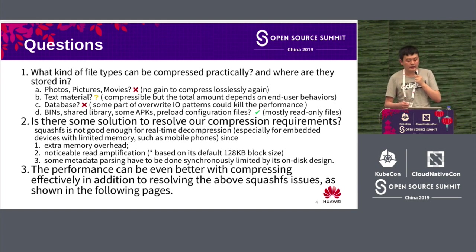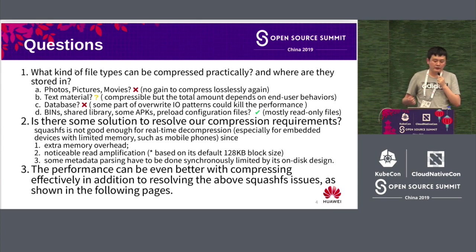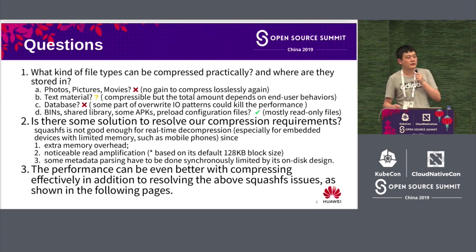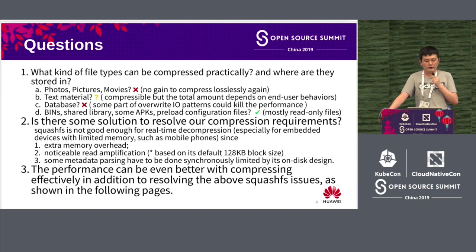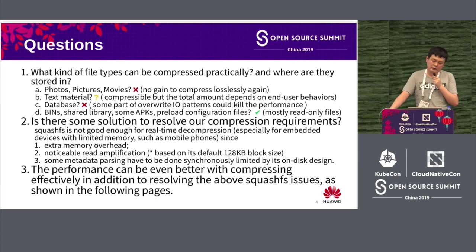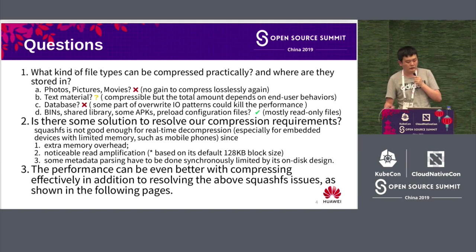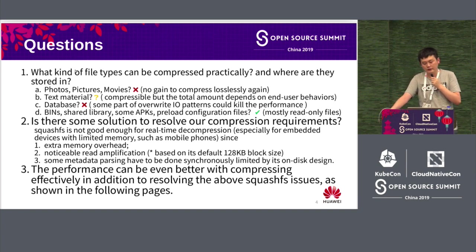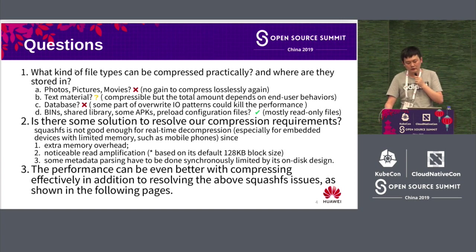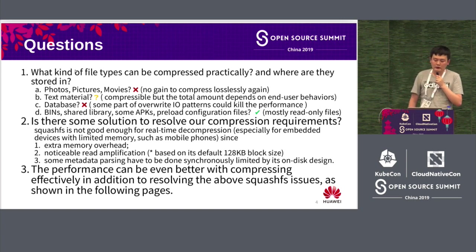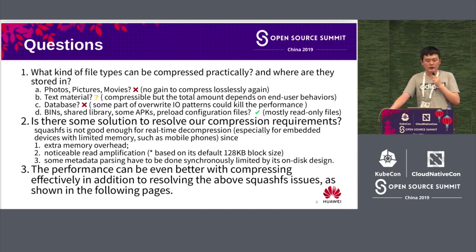Despite the fact that we have other tools for compression, if we introduce random IO pattern support with overwrites, then the effectiveness won't be that good. We are assessing documents that can be compressed. For example, photos — if you do compression, it will damage the quality. For text, that depends on the quantity. If you are supporting random IO patterns, it's not suitable for compression. Finally, we can only focus on binary documents and shared libraries. Most of them are read-only files, so we choose to focus on read-only files for compression.